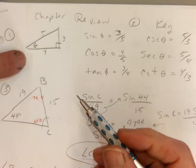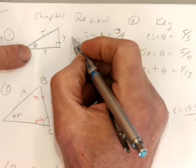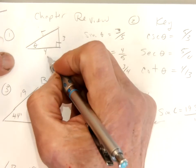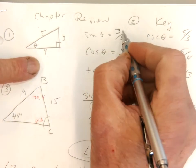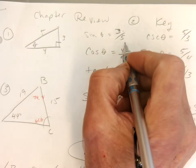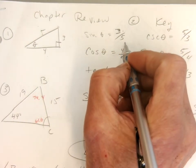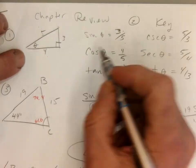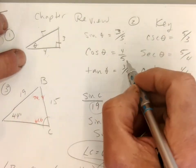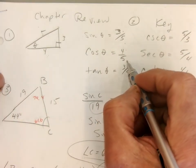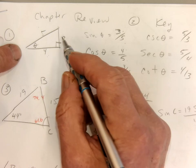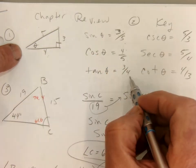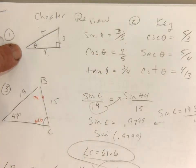Opposite, hypotenuse, adjacent. Sine is opposite over hypotenuse — that's the answer. I just need the ratio. Cosine is adjacent over hypotenuse — that's the answer. Tangent is opposite over adjacent, which is 3 fourths — that's the answer.